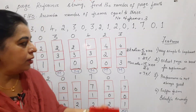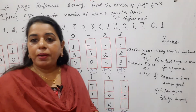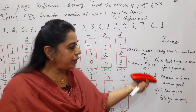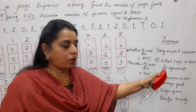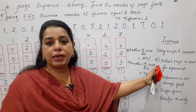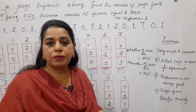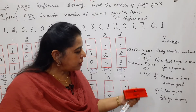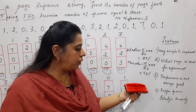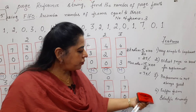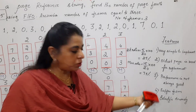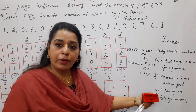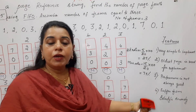Now for the features of the FIFO algorithm. First: it is very simple to implement — it is First In, First Out, so it is straightforward. Second: the logic is to replace the oldest page — the page which entered the memory first. Third: performance is not always good. Fourth: it suffers from Beladi's anomaly, which I will explain in detail in the next session.